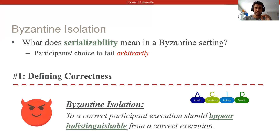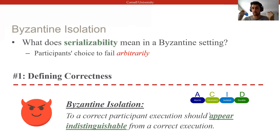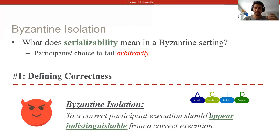What we strive to guarantee is that the execution appears to a correct client as indistinguishable from a serializable execution that involves only read and write operations issued by correct clients. Framed differently, we submit that it's completely acceptable for a Byzantine participant to wreak havoc on ACID guarantees, as long as every correct participant observes only state comprised of serializable transactions.